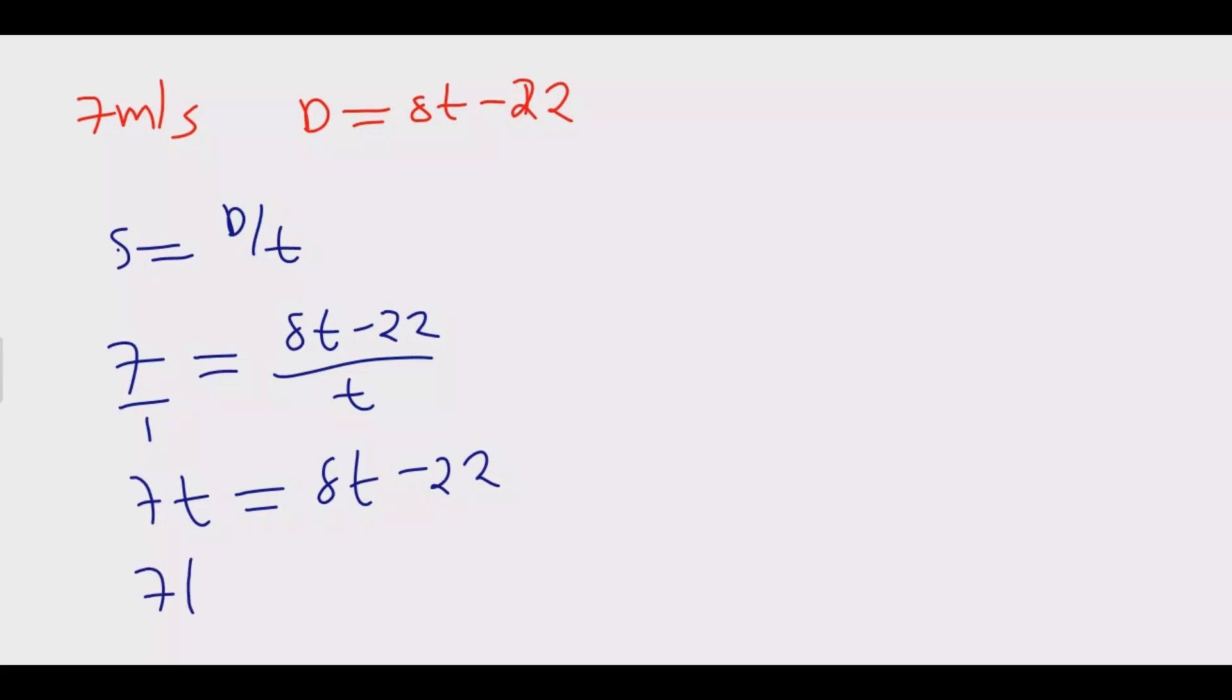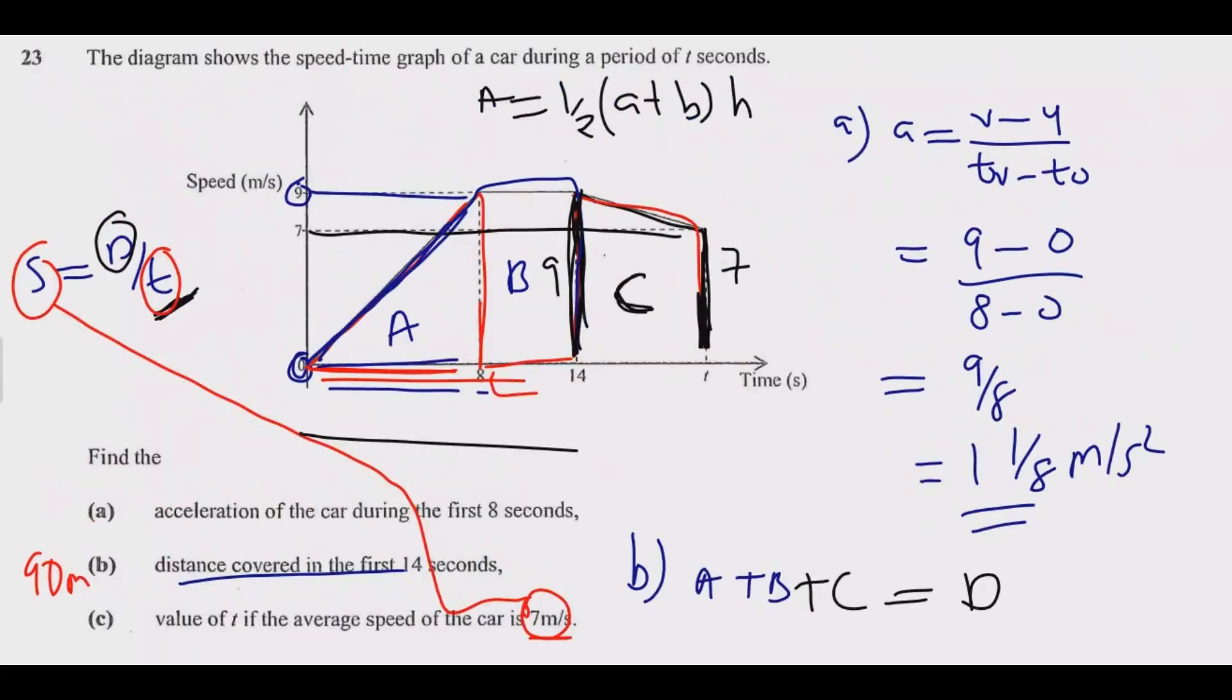Then we collect the like terms: 7T minus 8T, 8T crosses the equal sign, it becomes negative, is equal to negative 22. So from here, this tells me that negative T is equal to negative 22. I divide by negative 1, and T is equal to 22. So T is 22 seconds, because distance is meters and the time is being measured in seconds.